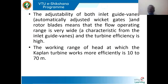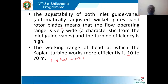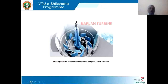The adjustability of both guide vanes and rotor blades means the operating flow range can be varied widely by the action of both the guide vanes and the runner vanes. Generally, the working head of a Kaplan turbine varies between 10 to 70 meters, because it is a low-head turbine. This is the general specification.